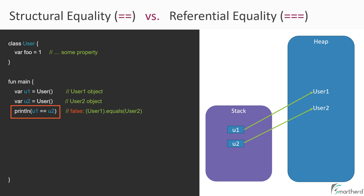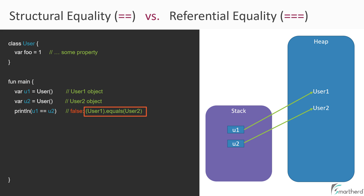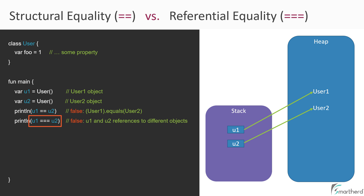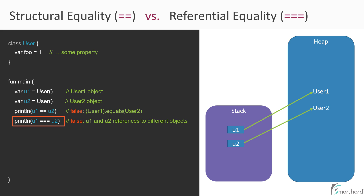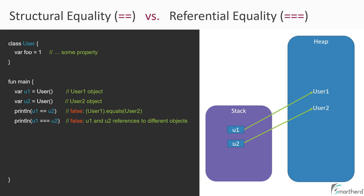If you compare u1 and u2 using the structural equality operator, we are comparing the values of u1 and u2. The value of u1 is user1 and the value of u2 is user2. Internally it uses the equals method. Since both values are different, we get false. If you compare them referentially, it is clear that u1 and u2 point to different objects, so we get false there as well.